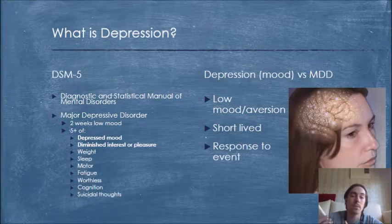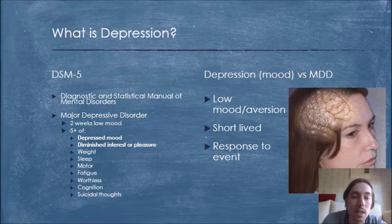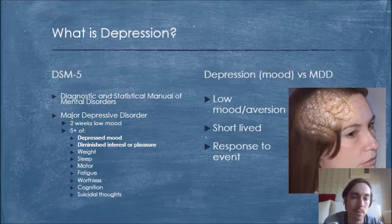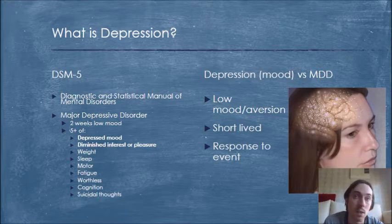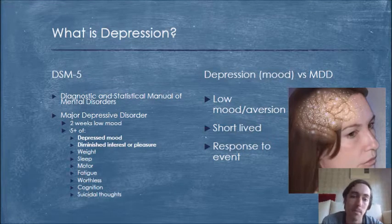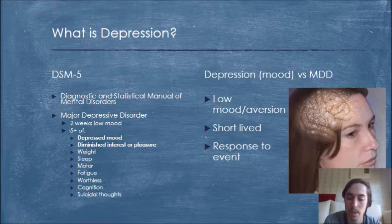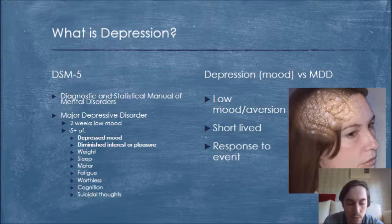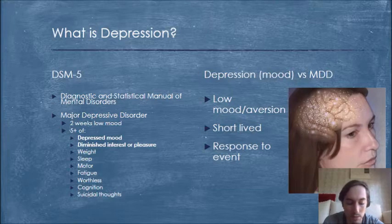So what is depression? According to the DSM-5, the Diagnostic and Statistical Manual of Mental Disorders, major depressive disorder or MDD is characterized by at least two weeks of persistently lowered mood, which could be characterized by anhedonia — the lack of will to live — lethargy, and pain. To be diagnosed, an individual must have at least five symptoms, including depressed mood most of the day nearly every day, indicated by subjective report such as feeling sad, empty, or hopeless, or observations made by others such as appearing tearful.